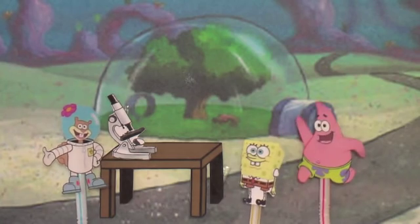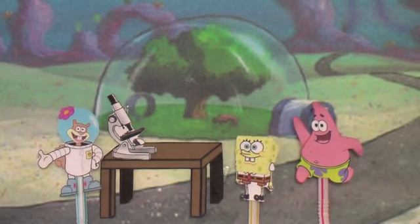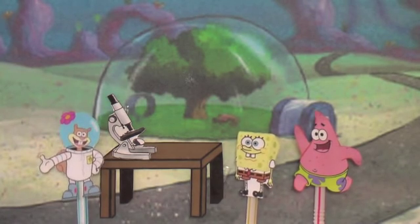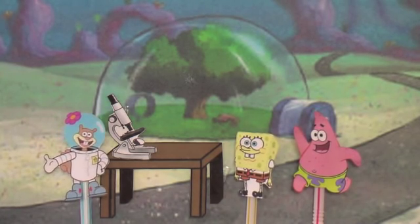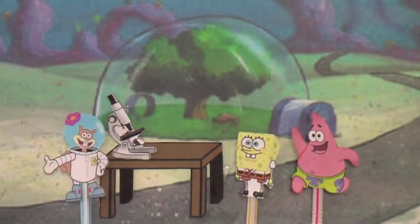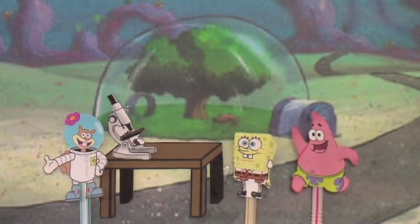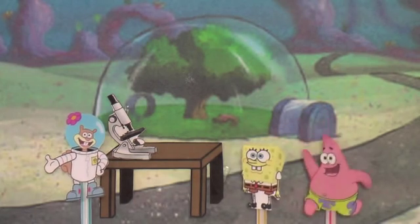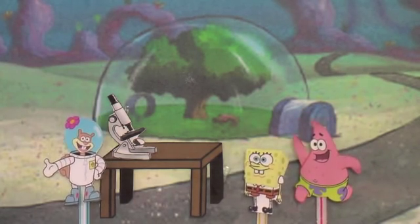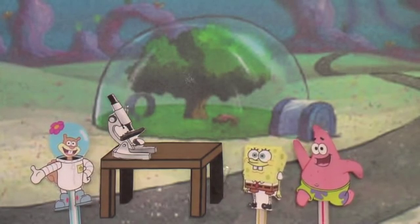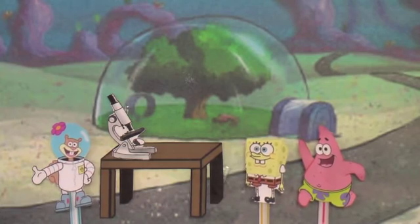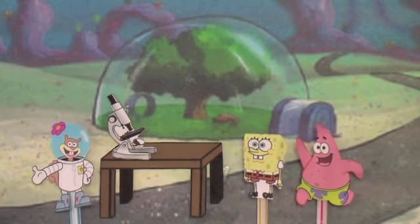Spongebob, I need food, I'm starving! We don't have any. Speaking of food, inside of a cell are mitochondria. Mitochondria are organelles that use oxygen to get energy from processing food. Is there anything else that has to do with food? Yes, Patrick, lysosomes. Lysosomes are vessels that contain chemicals that break down materials taken in the cell, as well as old cell parts.